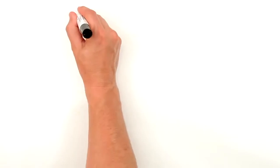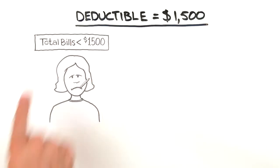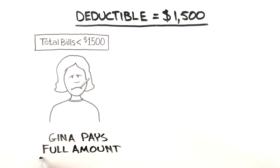Here's an example. Gina has a health plan with a $1,500 deductible. If Gina only has a few little things go wrong during the year that cost less than $1,500 total, she's going to pay the full amount to treat them.